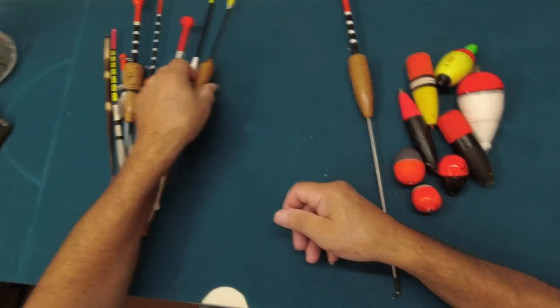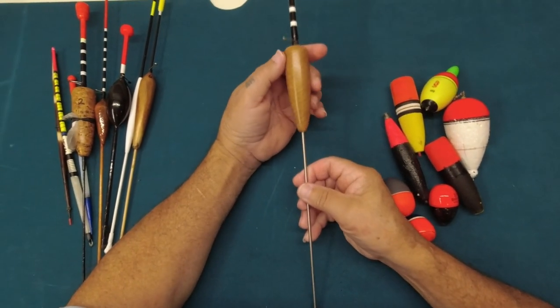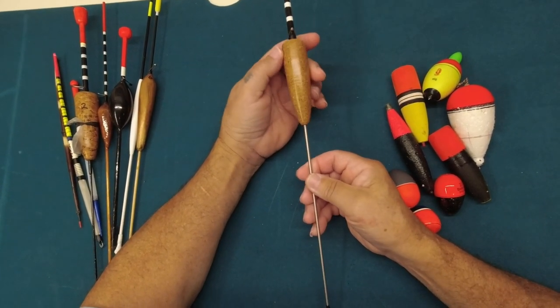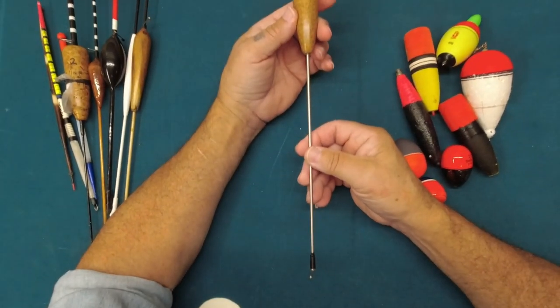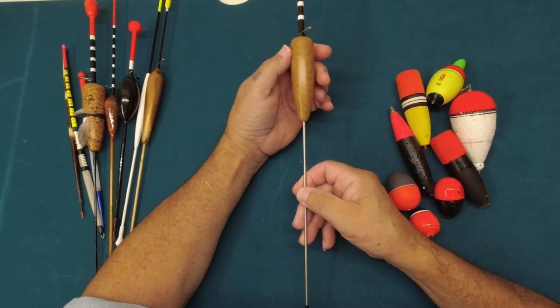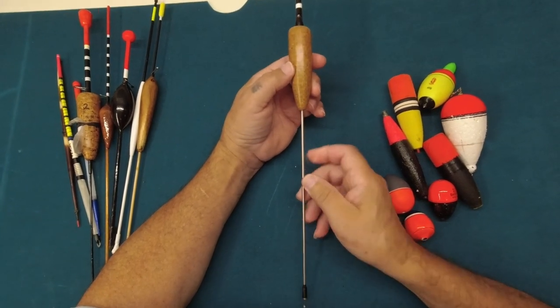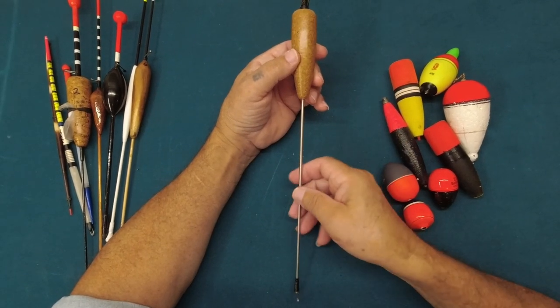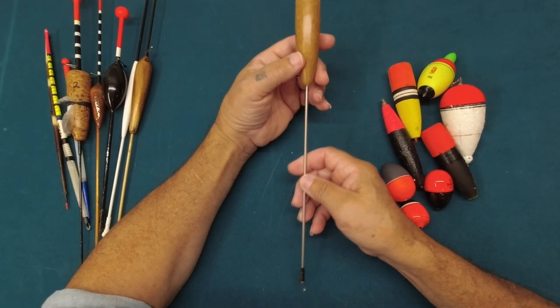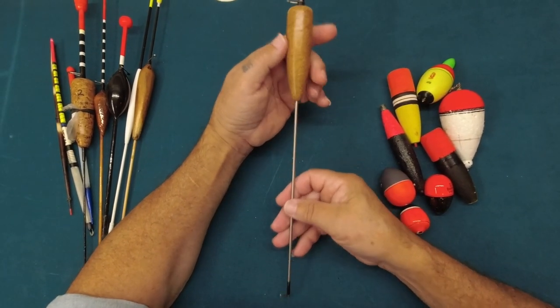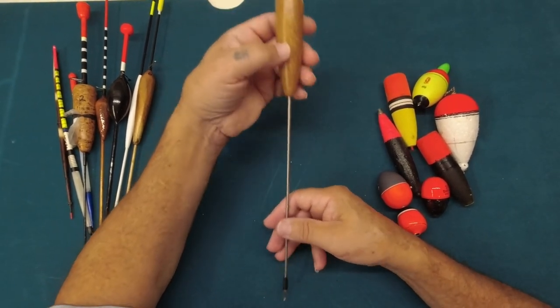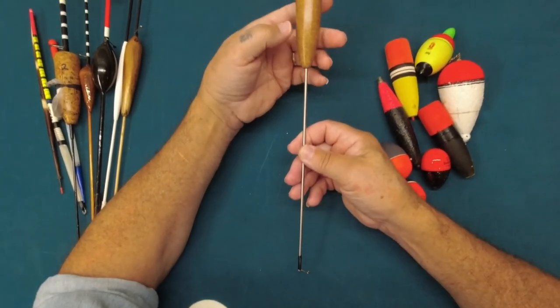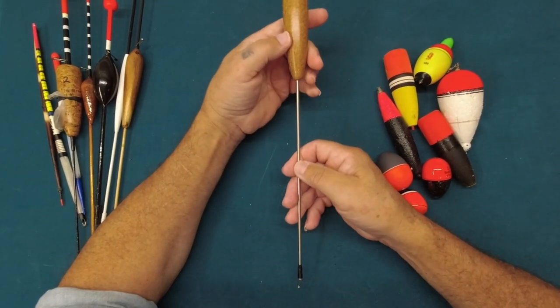That one's a homemade float as well. If you haven't seen my videos on making these, go ahead and check them out because I'll show you step by step how to make these floats. It's got a stainless steel shaft on it and it's pre-weighted because of the stainless steel. It's a fantastic float, very robust. You won't have that snapping on you in a hurry.